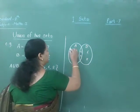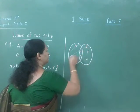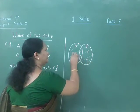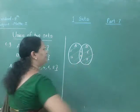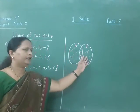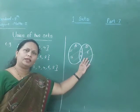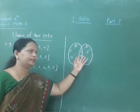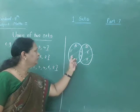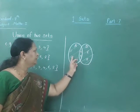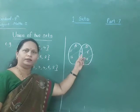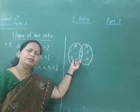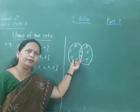All these set regions represent the union set of A and B. So if you have a portion of A, then you represent the union of two sets, that is 1, 2, 3, 4, 6 and 8. All the shaded portions represent the union set of A and B.